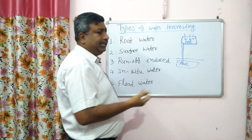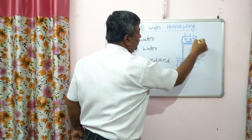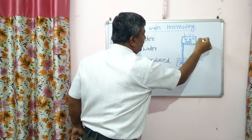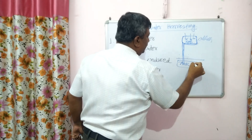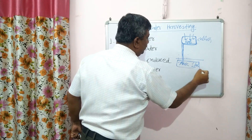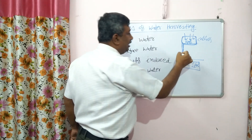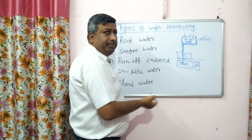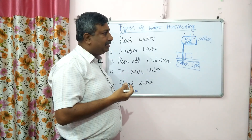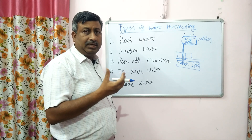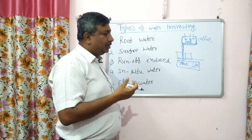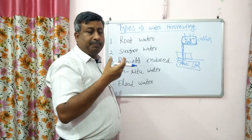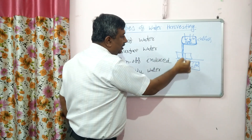This is a very common practice in hilly areas. The water present on the roof is collected and stored in a tank either above or below the soil surface. This water is used for drinking and domestic purposes, not largely for agriculture. Rainfall is pure water, so it is suitable for drinking.